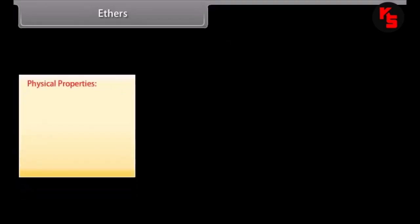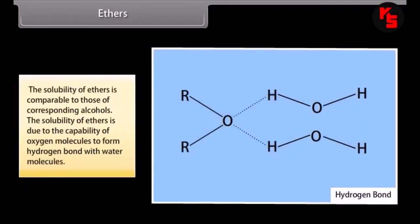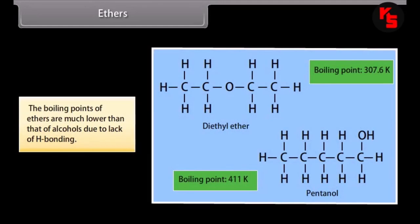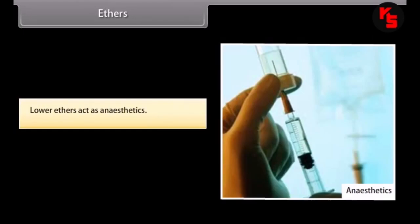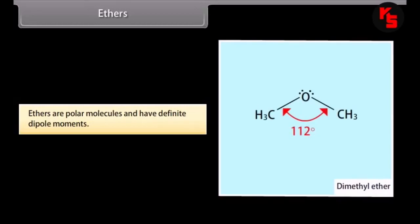Physical properties of ethers: lower members such as dimethyl ether and diethyl ether are gases, while higher members are colorless, pleasantly-smelling, low-boiling volatile liquids. The solubility of ethers is comparable to those of corresponding alcohols, due to the capability of the oxygen to form hydrogen bonds with water. The boiling points of ethers are much lower than those of alcohols due to lack of hydrogen bonding. Lower ethers act as anesthetics, and ethers are polar molecules with definite dipole moments.